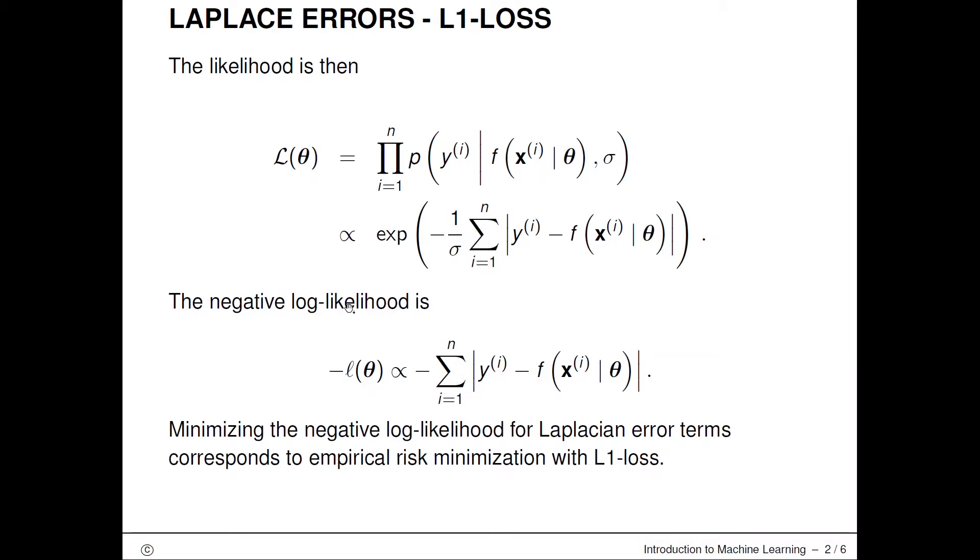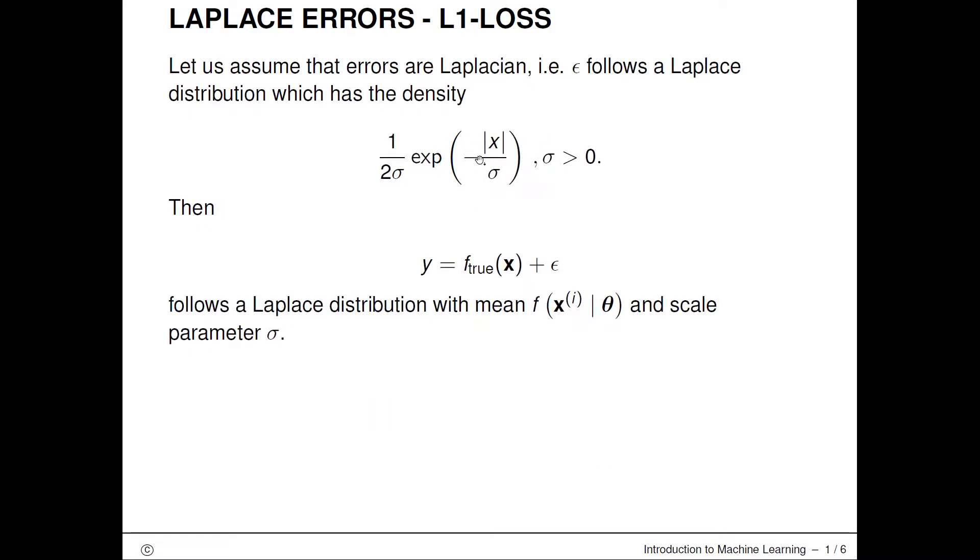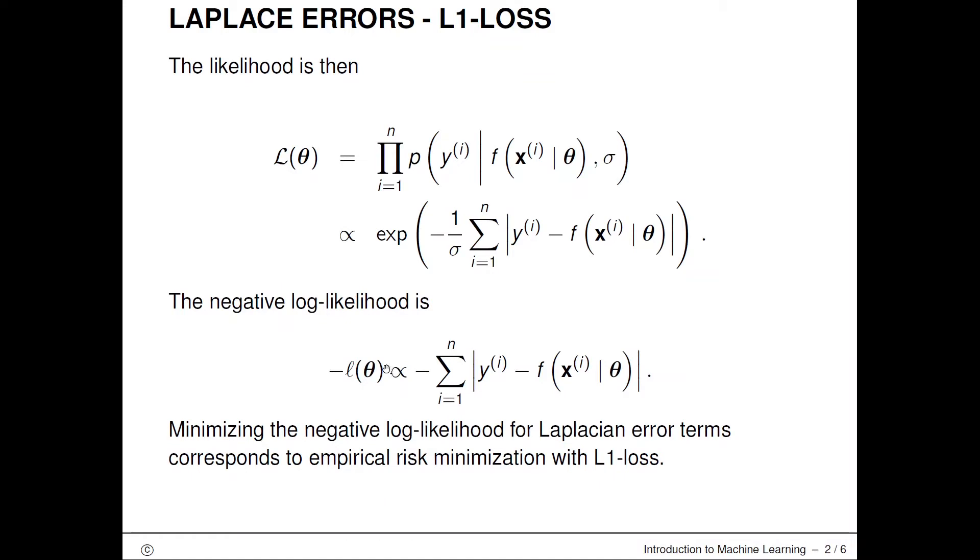The negative log likelihood will simplify to this inner part of the exponential function of the distribution. If we get rid of all multiplicative and additive constants, we'll simply be left with the absolute difference between true targets and predicted scores. This is simply the L1 loss from a machine learning perspective.